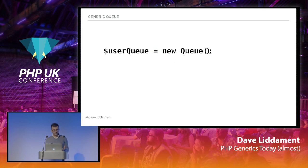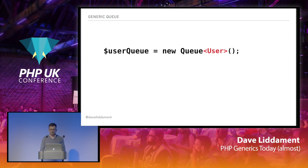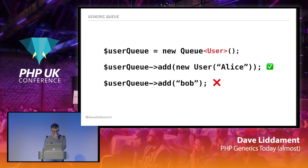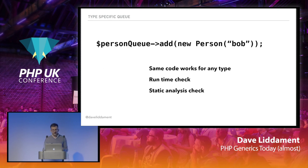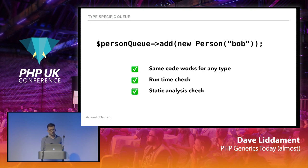Instead of creating a queue generically, in languages that support generics we can do something like: new Queue<User>. That means behind the scenes, wherever we had T, it gets replaced with the type User. As before, it will have runtime checks to know if we're adding a User, and if we try to add something that isn't a User, it will fail. The same code works for any type — we only write the queue class once, we have runtime checks, and we can apply static analysis.